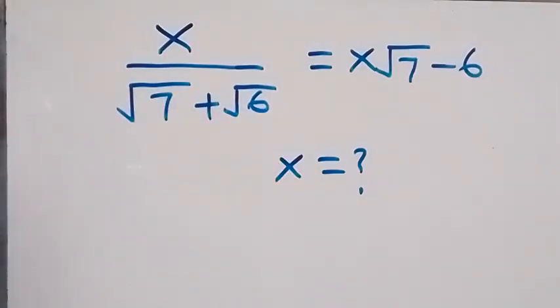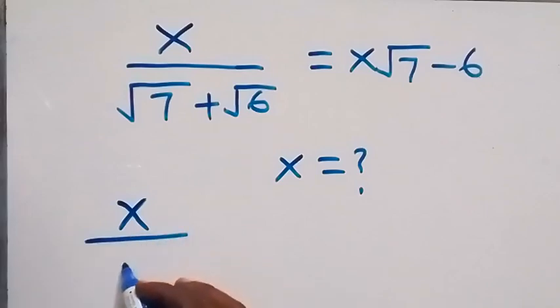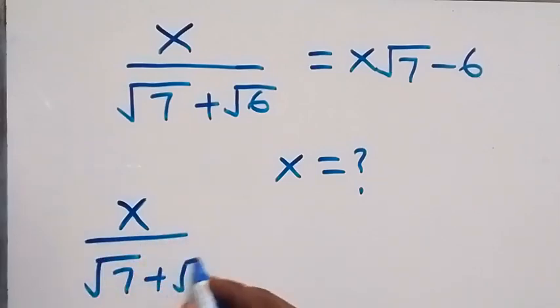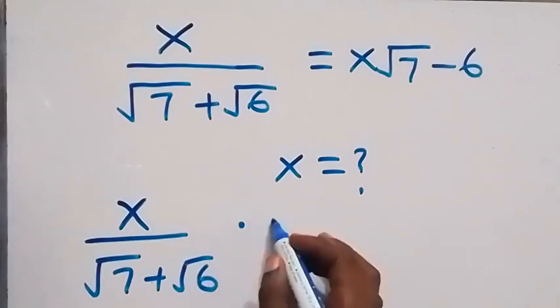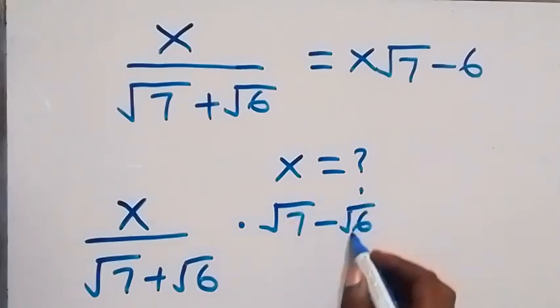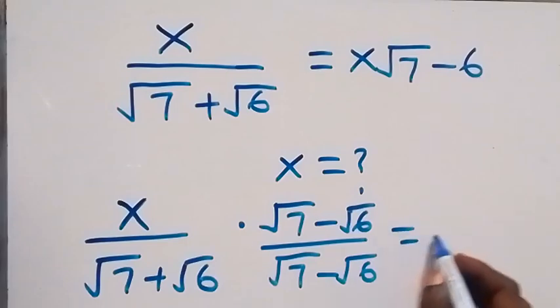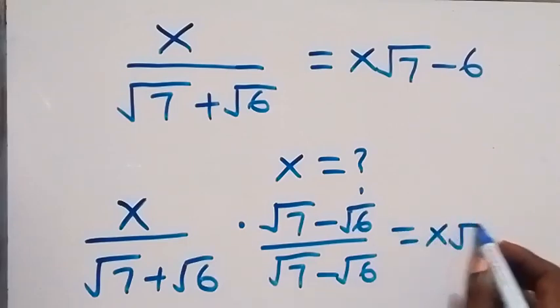That is, we rationalize the left hand side. And this will become x over root 7 plus root 6, then multiply by root 7 minus root 6 over root 7 minus root 6 equals to x root 7 minus 6.